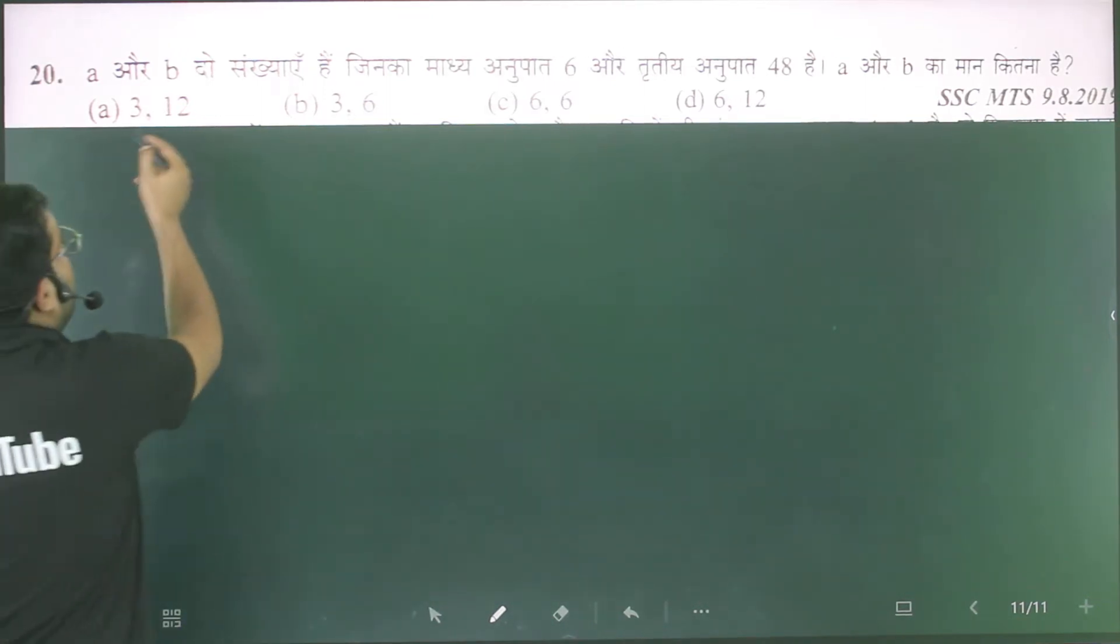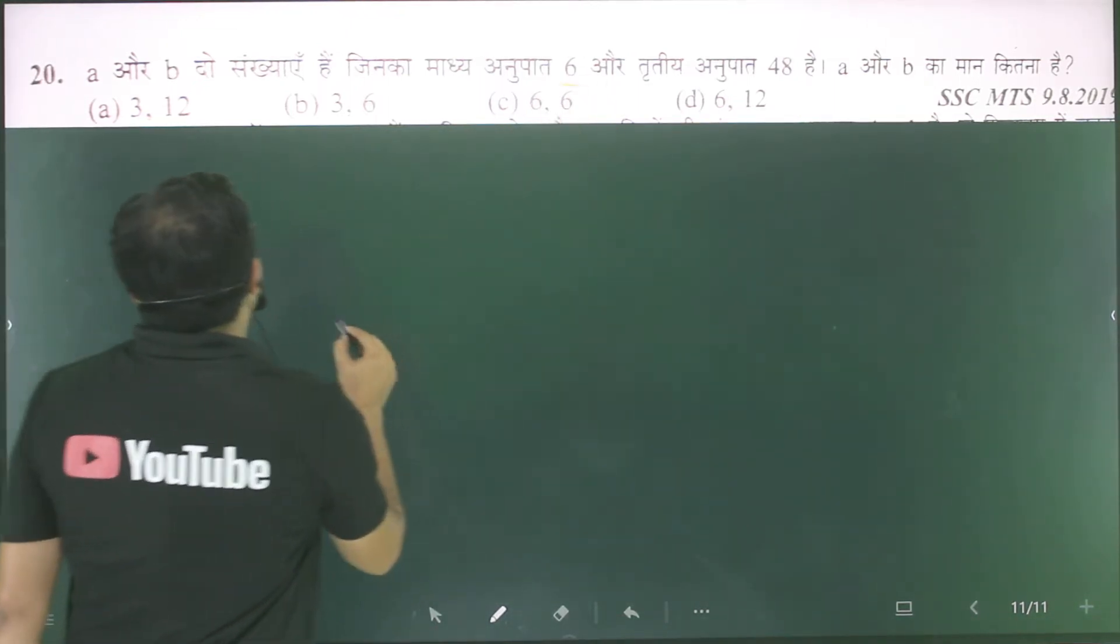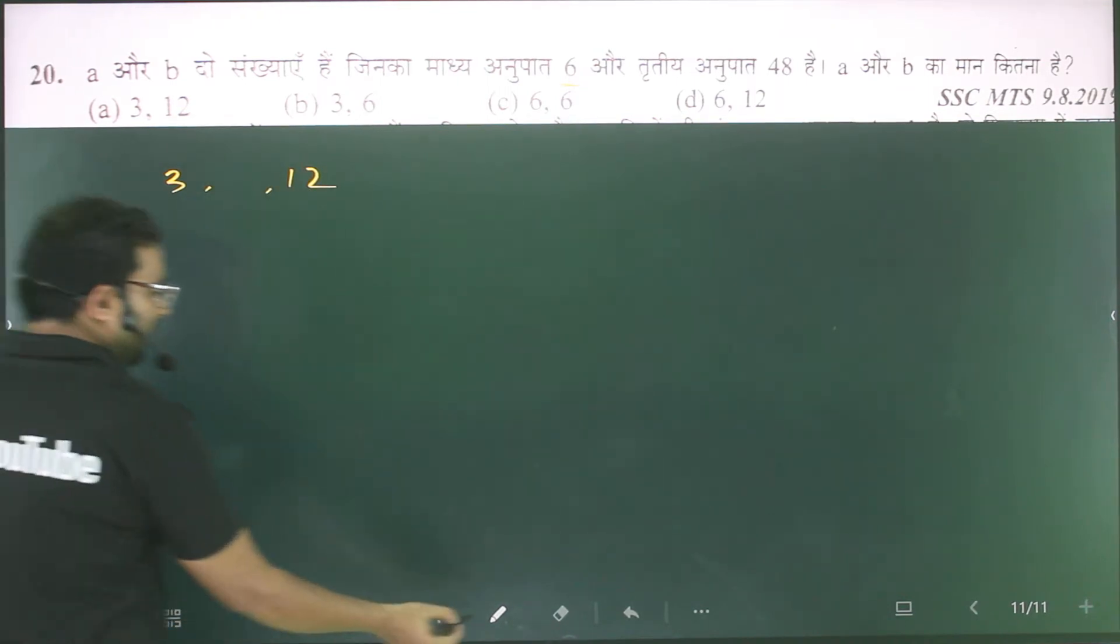One thing to tell you - this is A and B, how much is it? 6. Now 3 and 12, how much is it? 6.